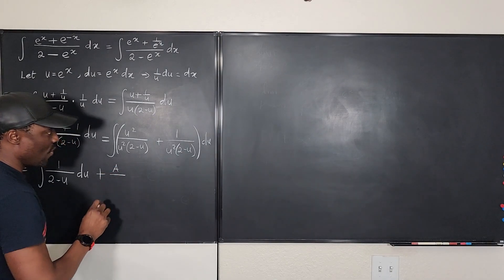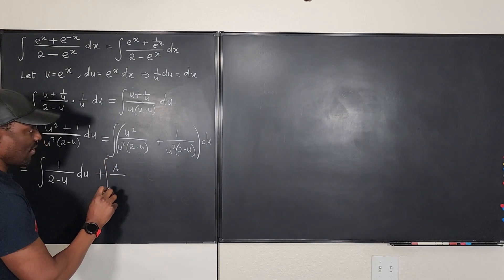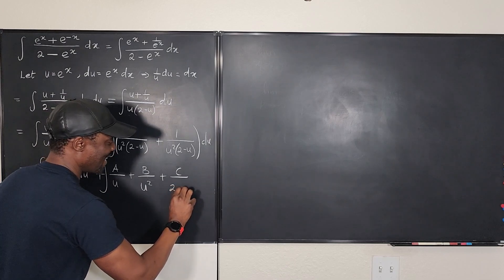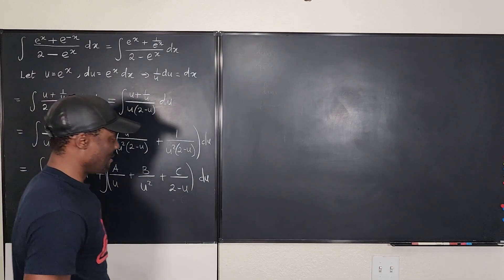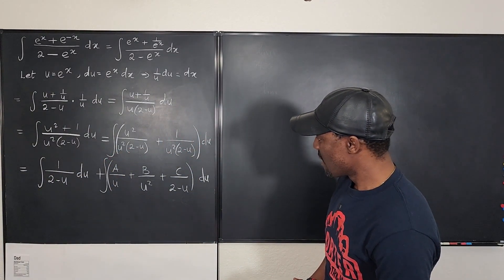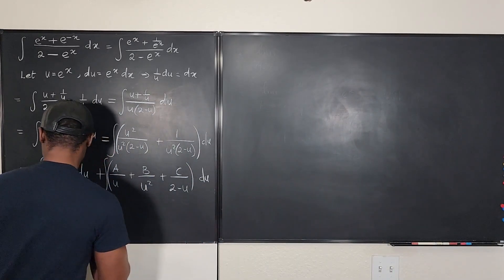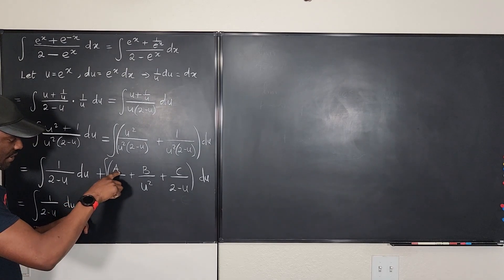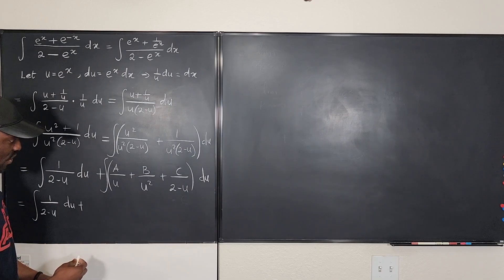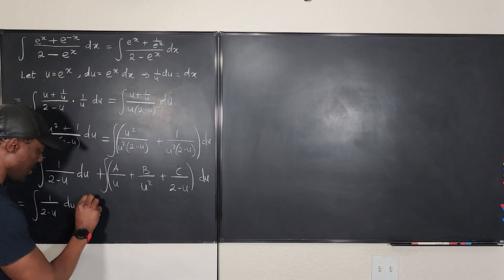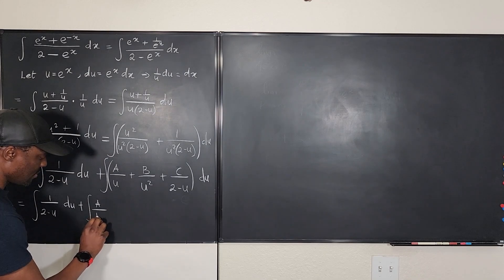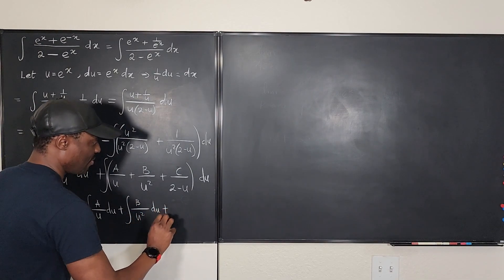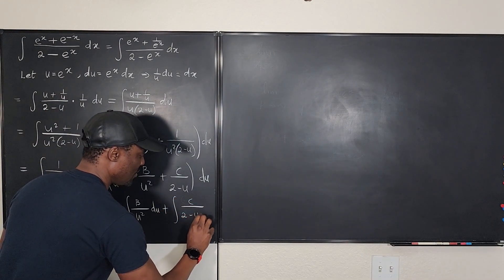So I set up the partial fraction decomposition. The integral of 1 over (u squared times (2 minus u)) becomes the integral of a over u plus b over u squared plus c over (2 minus u), all du. I'll split this into the integral of a over u du, plus the integral of b over u squared du, plus the integral of c over (2 minus u) du.